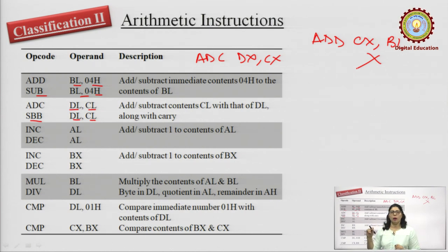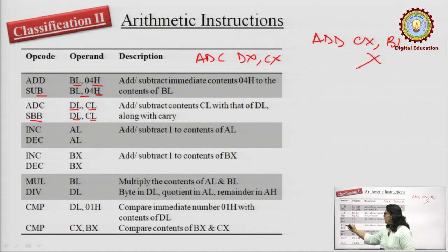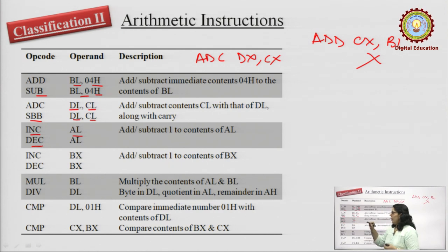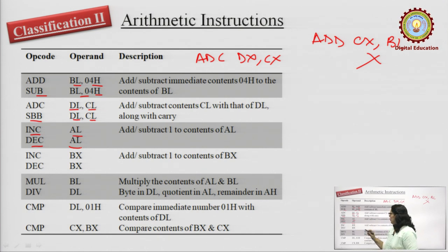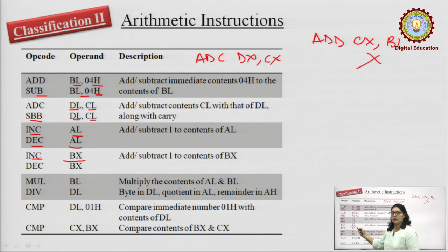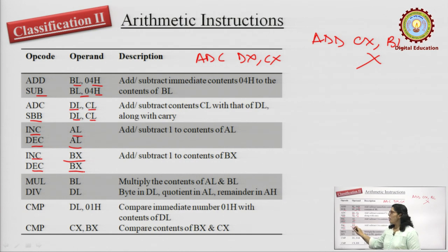Moving further, if we need to increment or decrement numbers: INC stands for increment — if you want to manipulate an 8-bit number, mention an 8-bit register. DEC stands for decrement — similarly, specify an 8-bit register for an 8-bit number. For 16-bit numbers: INC BX means the 16-bit number in BX is incremented by 1, and DEC BX means the 16-bit number in BX is decremented by 1.